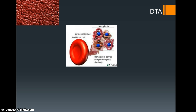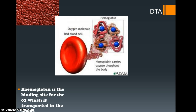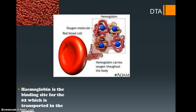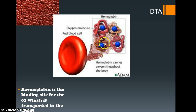Principally, what we have inside our red blood cells is hemoglobin. Hemoglobin is a binding site for O2 where it's transported in the blood. Inside our red blood cell we have these hemoglobin molecules, and the O2 is drawn towards them, binds to them, and is carried around by the red blood cells.